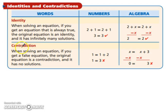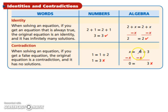A contradiction: when solving an equation, if you get a false equation, the original equation is a contradiction and it has no solutions. For example, x equals x plus 3 — there are no values for x that will give you an equal statement, because 0 does not equal 3. Let's practice this.